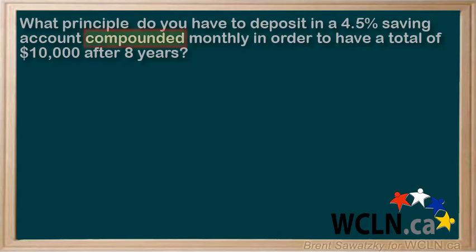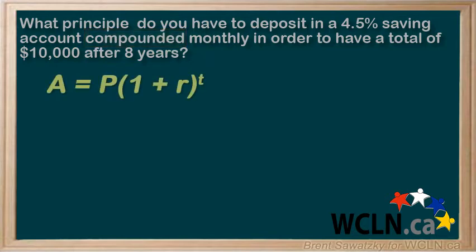This is clearly a compound interest question, so we'll write down our original compound interest formula: A equals P times 1 plus R to the T.